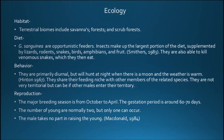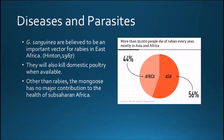The gestation period is around 60 to 70 days. The number of young is normally two, but only one can occur. The male takes no part in raising the young. This particular species is believed to be an important vector for rabies in East Africa. They also kill domestic poultry when available.